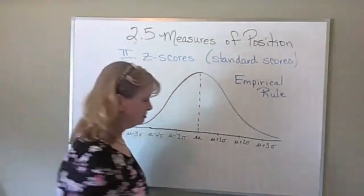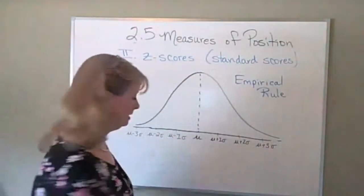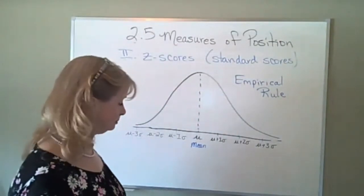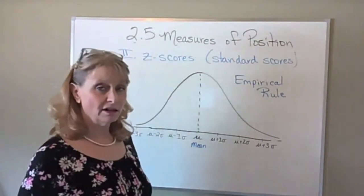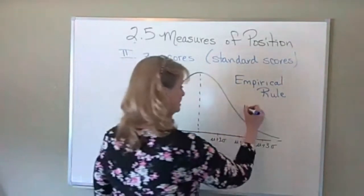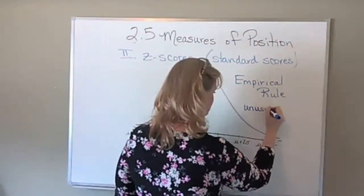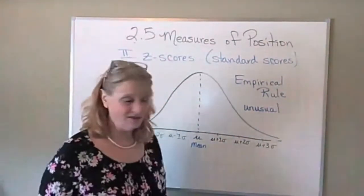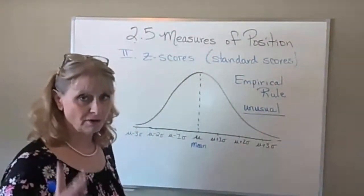There can be data values more than three standard deviations on either side of the mean, but that's really unusual. It's really unusual for a data value to be more than three standard deviations from the mean. In fact, they're going to call a data value unusual if it's more than two standard deviations from the mean.